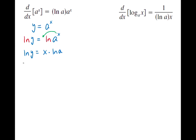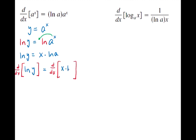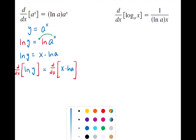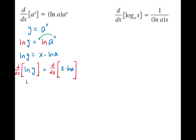Now we take the derivative of both sides with respect to x. Using implicit differentiation on the left hand side, we get one over y times dy/dx. On the right hand side, the derivative of x times ln(a) is just like saying the derivative of 2x is 2 — it's x times a constant. The constant is ln(a), so the derivative of x times ln(a) is simply ln(a).